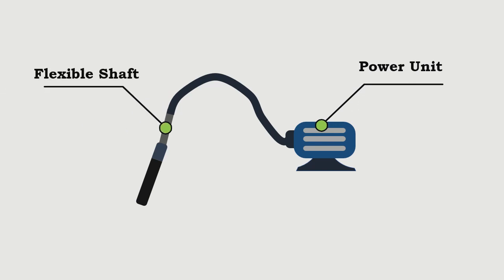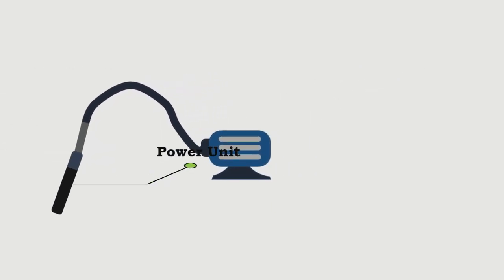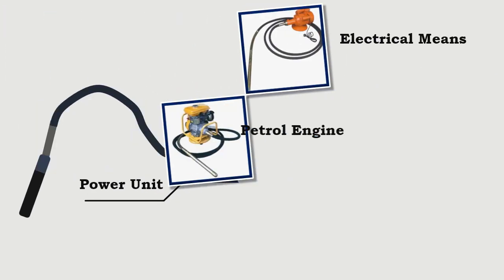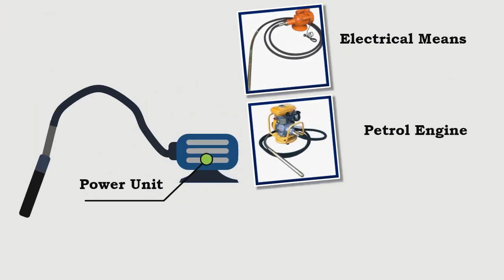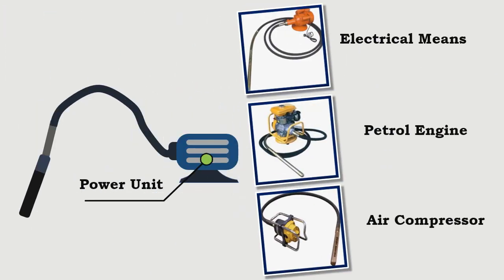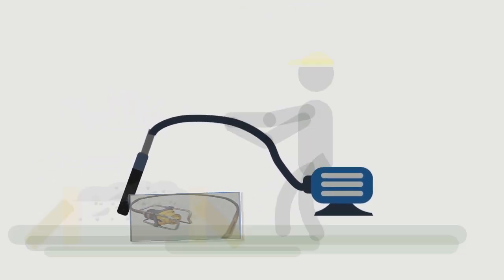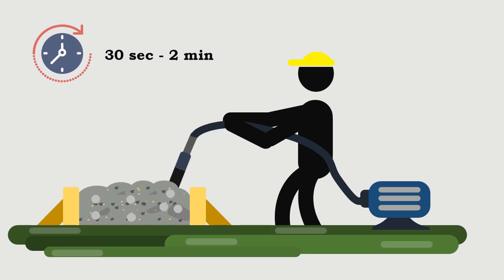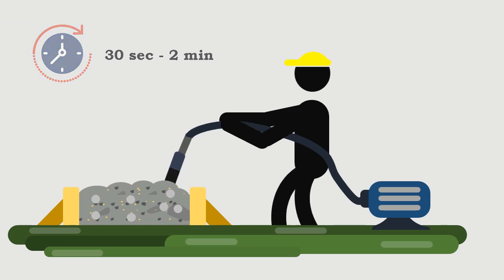The power unit is operated by electrical means, by petrol engine, or by air compressor. The vibrator is inserted into the concrete for a duration of about 30 seconds to 2 minutes.